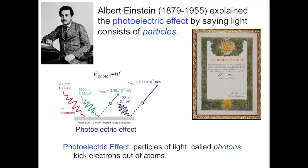Albert Einstein, in the early 20th century, explained the photoelectric effect by saying that light consists of tiny particles. The photoelectric effect was observed in the laboratory. When one bombarded a piece of metal, for example potassium or cesium, with different wavelengths of light, electrons would be kicked out of the metal, which could then be detected as causing a little bit of an electric charge.